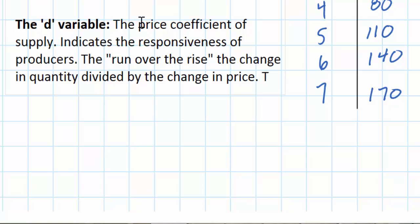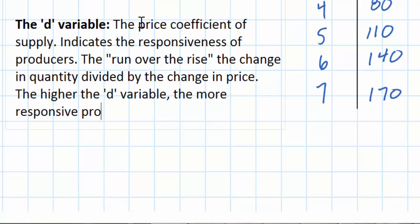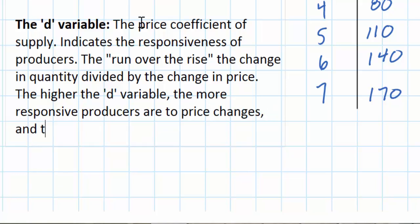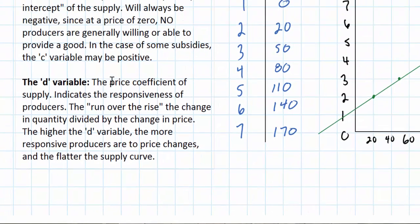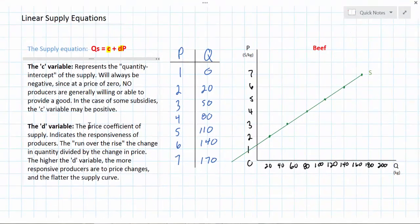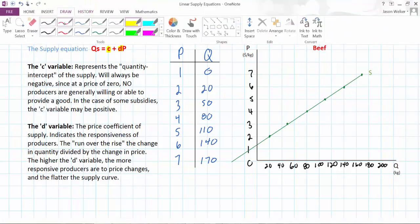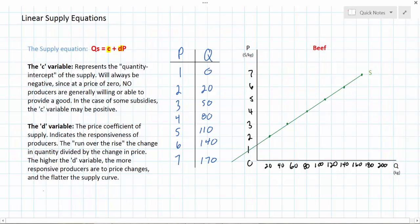The higher the D variable, the more responsive producers are to price changes and the flatter the supply curve will be. The lower the D variable, the less responsive producers are to price changes and the steeper the supply curve will be. So keep in mind the D variable is not the slope — it is run over rise. We're going to start by showing how to calculate the D variable, which is simply the change in quantity over the change in price between two points on our supply curve.